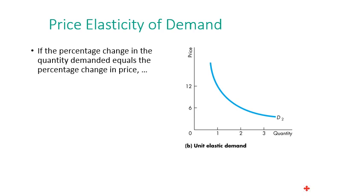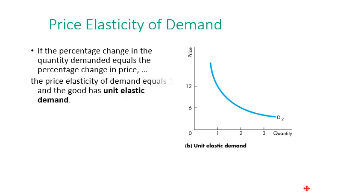Let's go to another case: unit elastic demand. In unit elastic demand, the elasticity equals 1, which means the percentage change in quantity equals the percentage change in price — something like equivalents. If the percentage change in quantity demanded equals the percentage change in price, then the price elasticity of demand equals 1 and the good has unit elastic demand.